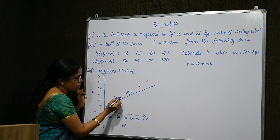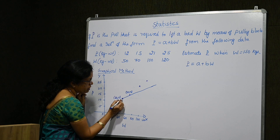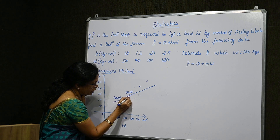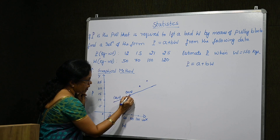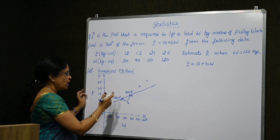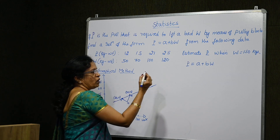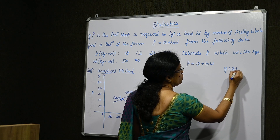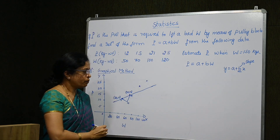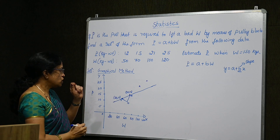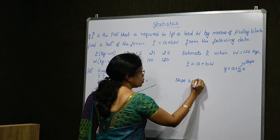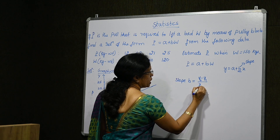To find the parameters using the graphical method, when we have the straight line, we form a right-angle triangle with it. Let this right-angle triangle have points L, M, N with a 90-degree angle. We find the slope of the straight line. In the standard form y equal to a plus bx, B represents the slope. The slope B is equal to (y2 minus y1) divided by (x2 minus x1).